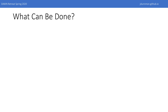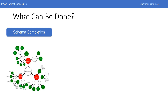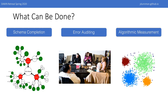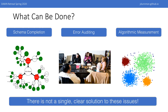The natural question to ask at this point is what can we do about this? In our paper, we analyzed three distinct approaches. First is schema completion, where a schema that includes important subsets is defined prospectively, perhaps by domain experts, and is used in evaluation. Another approach we explore is error auditing, where human experts continually review model outputs to discover common error types. And finally, we look into the idea of algorithmic measurement, where an automated method such as unsupervised clustering is used to discover underperforming subsets. Each of these methods has pros and cons, which we explore in more detail in the paper.